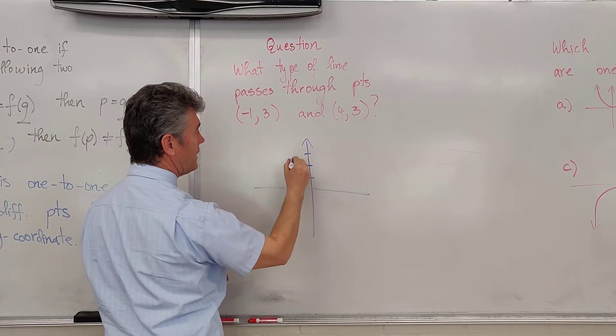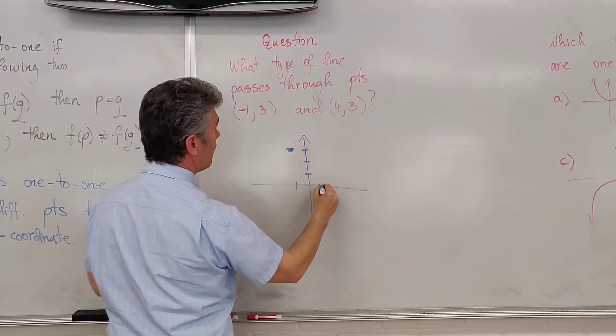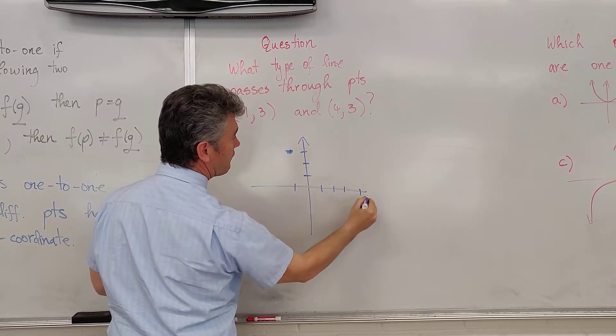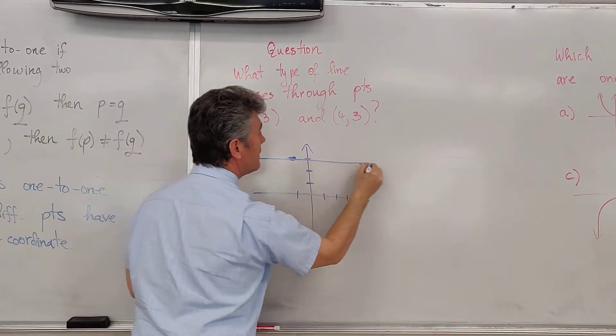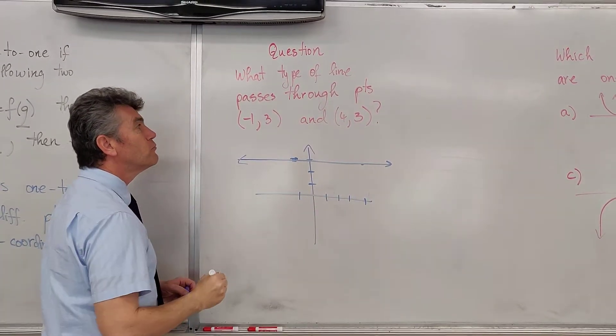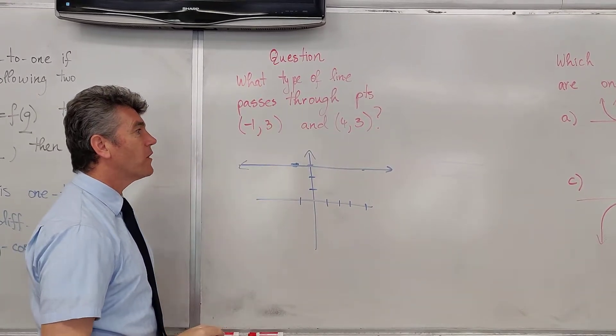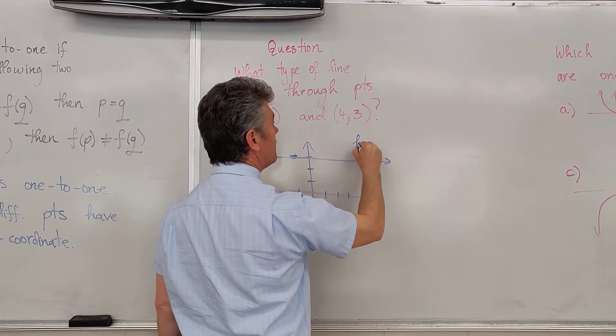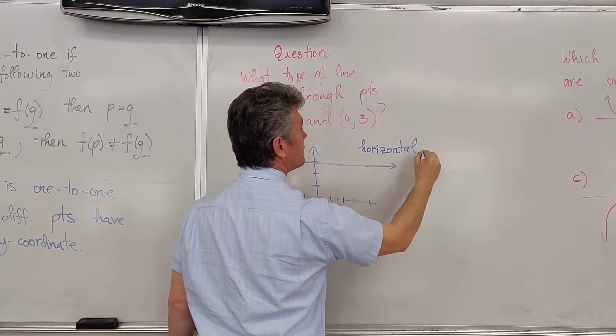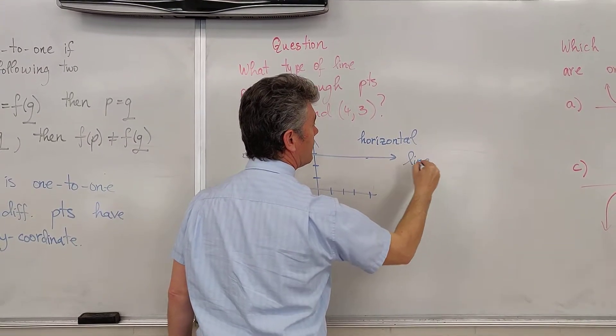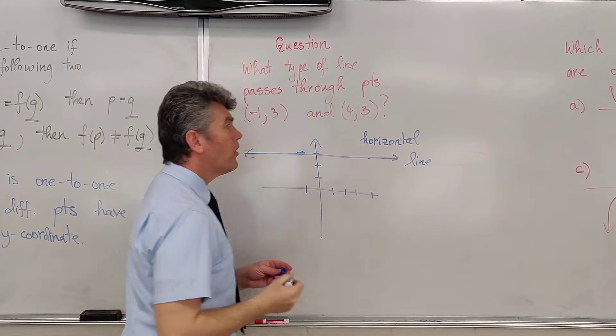Let's plot those two points and answer this question. Negative 1 and 3, there it is. 4 and 3: 1, 2, 3, 4 to the right, 3 up. The type of line that passes through two points that have the same y-coordinate is a horizontal line.